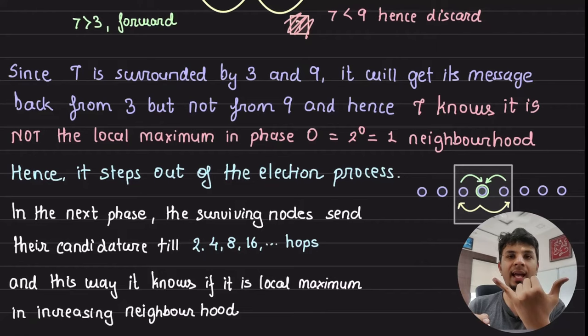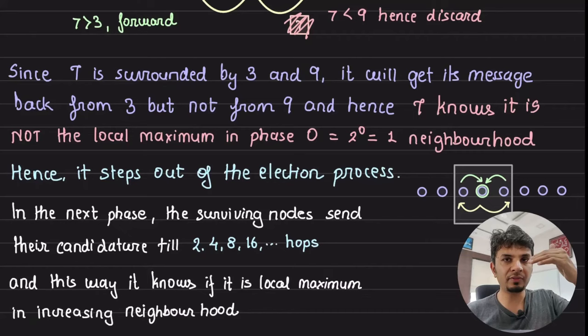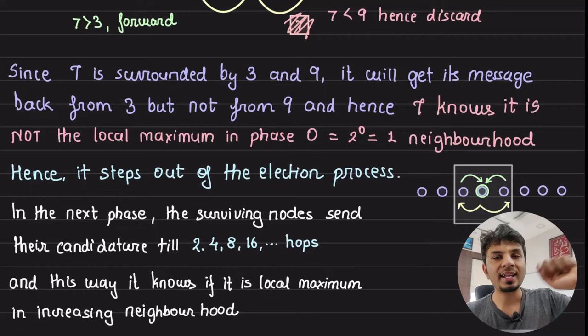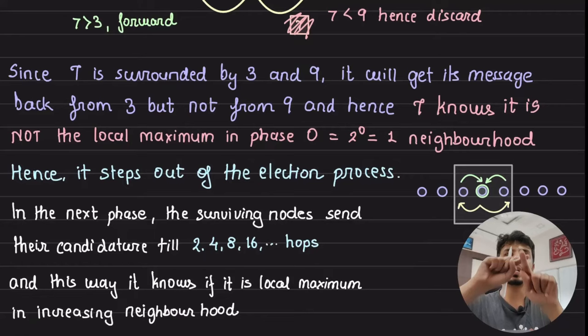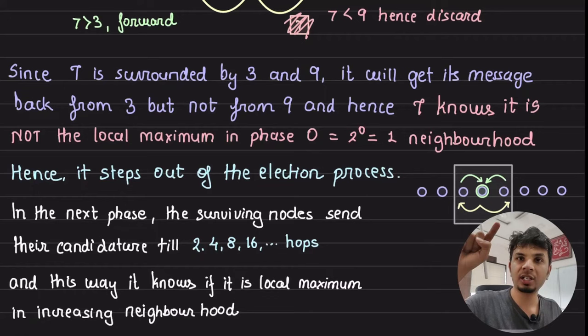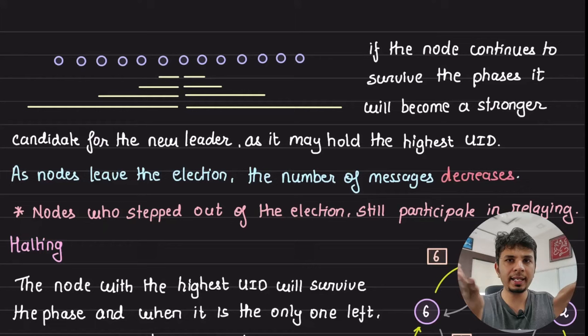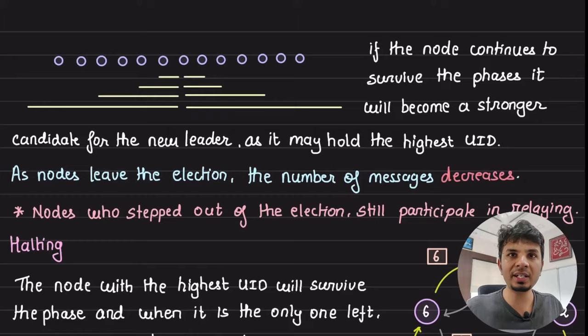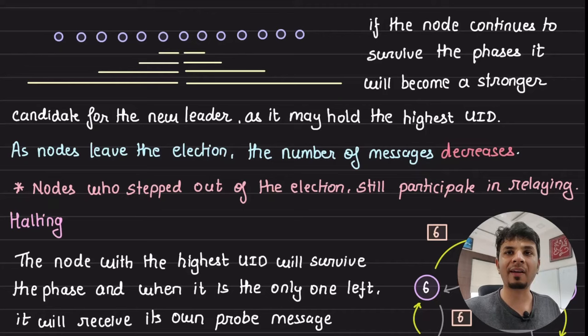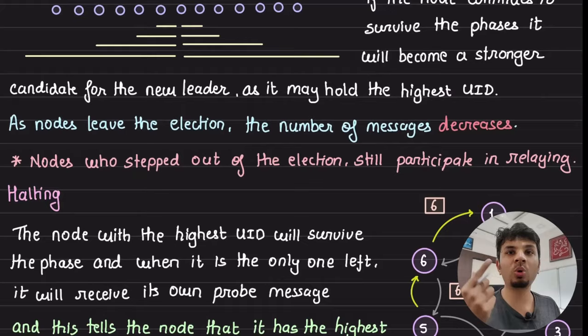In subsequent phases — 0, 1, 2, 3, 4 — a node constantly tests itself: am I the local maxima in a neighborhood of 1, 2, 4, 8? Eventually the ring is exhausted and a node receives its own probe message back. At that point it knows it is the leader. The node with the largest UID survives this entire process because all other messages are discarded. This is the core idea of the algorithm.